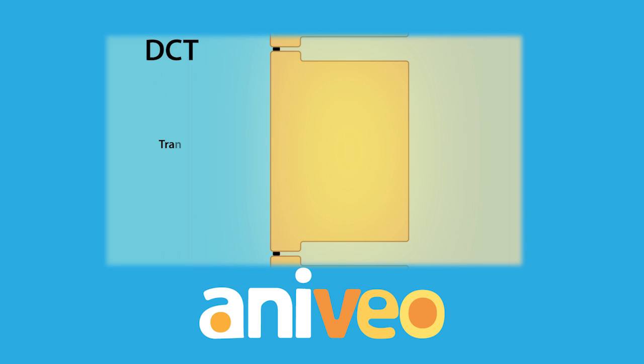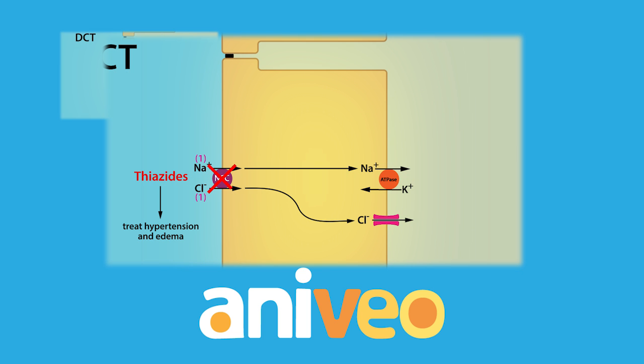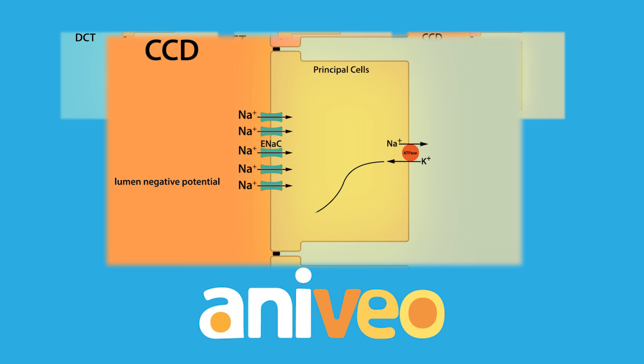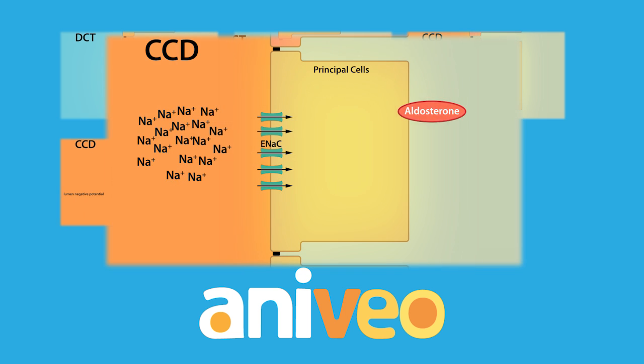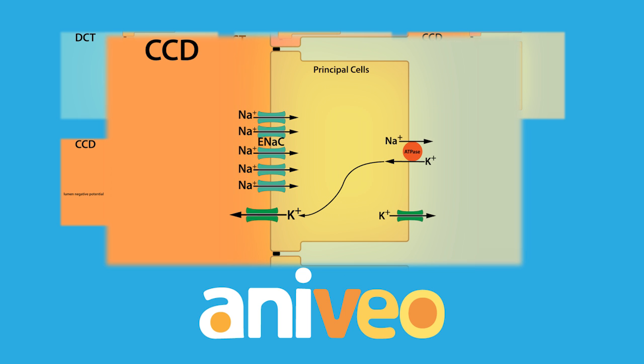In summary, sodium is reabsorbed transcellularly along the distal convoluted tubule by sodium chloride or NCC cotransporters. The NCC cotransporter is inhibited by thiazides. Sodium is reabsorbed transcellularly along the cortical collecting duct by principal cells via the epithelial sodium channel, or ENaC. ENaC-dependent sodium reabsorption creates a lumen-negative potential, which promotes potassium secretion. Aldosterone increases ENaC-dependent sodium reabsorption by increasing the number and activity of ENaC. And excessive ENaC-dependent sodium reabsorption can lead to hypokalemia.